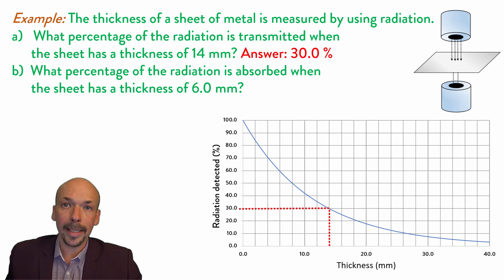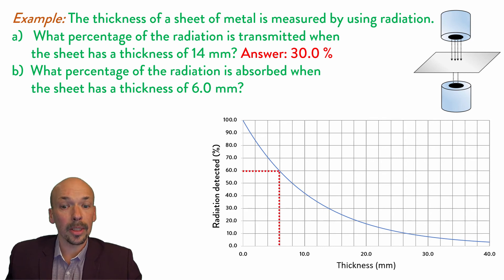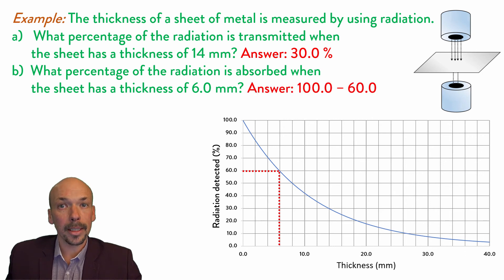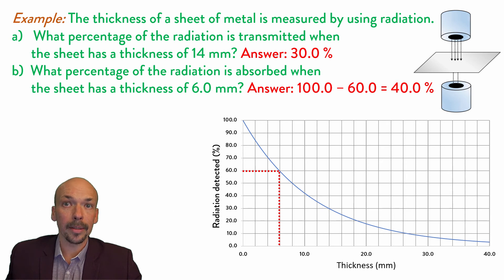Now we will look at the second question: what percentage of radiation is absorbed when the sheet has a thickness of 6 mm? At 6 mm we can read that 60% of the radiation has been transmitted. So we do 100 minus 60, and that's 40%. So with a thickness of 6 mm, the sheet of metal will absorb 40% of the radiation.